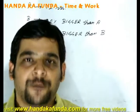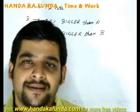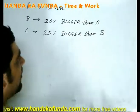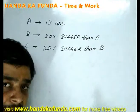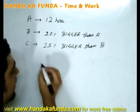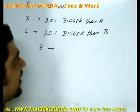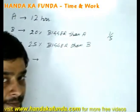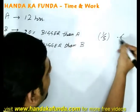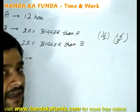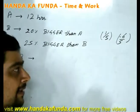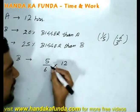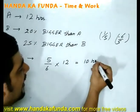Sometimes we are not given the time taken to do a job directly; data is provided in a slightly different format. For example, A takes 12 hours to fill a tank, and B is 20% bigger than A as a pipe. The first thing is to figure out how much time B will take. If B is 20% bigger, it is 1/5 bigger, meaning it is 6/5 times the size of A. Since time is inversely proportional to size, B will take 5/6 of 12, which is 10 hours.